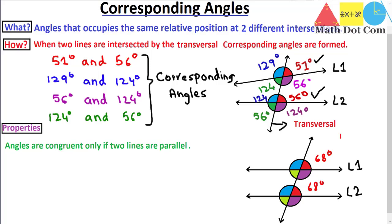The blue angle is 112 degrees and similarly 112 degrees. The purple one is 112 degrees here and similarly 112 degrees here. The green one is 68 degrees here and similarly 68 degrees here. So it is clear from the figure that when two lines are parallel and intersected by a transversal, the corresponding angles formed will be congruent — 68 equals 68, and 112 equals 112, occupying the same relative positions at two different intersections. This was not the case when the two lines were not parallel.